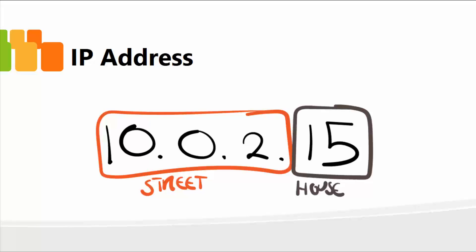An IP address looks like a bunch of numbers, such as 10.0.2.15. The first three octets, or the first three numbers, are the street address, and then the last one is your actual house number. Think of an IP address as just an address that is unique to each computer on the network.